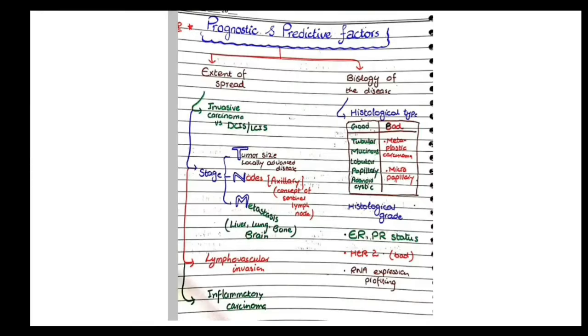Another thing that is related to the biology of disease is histological grade. Obviously, if the tumor is high grade or undifferentiated, it has a worse prognosis.